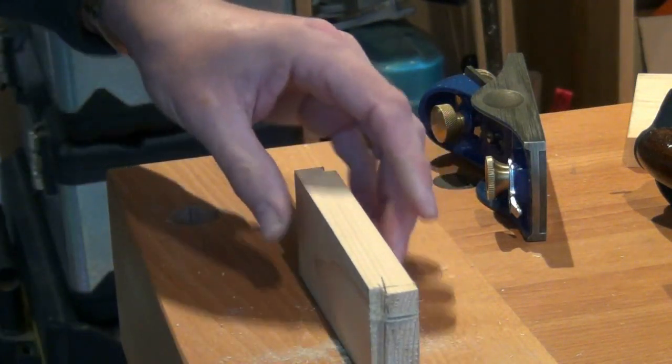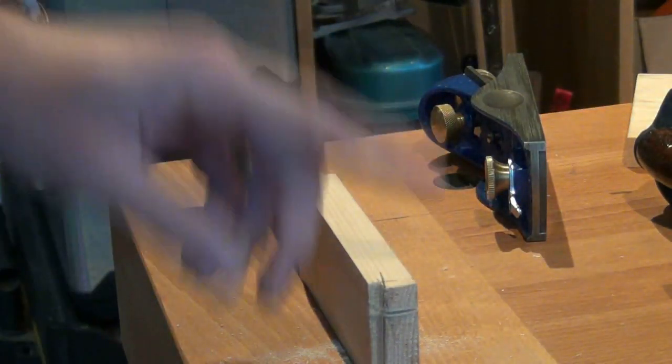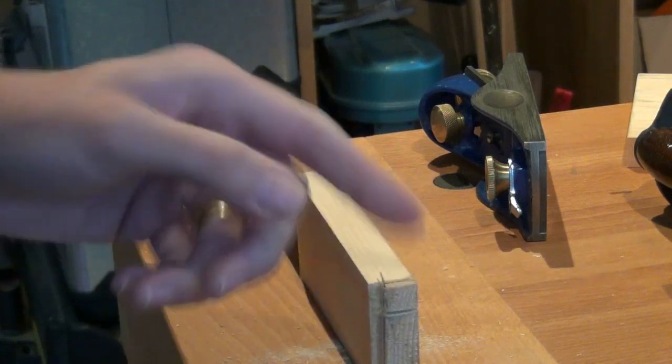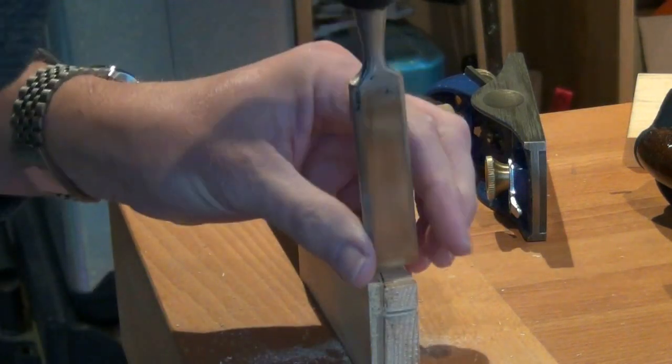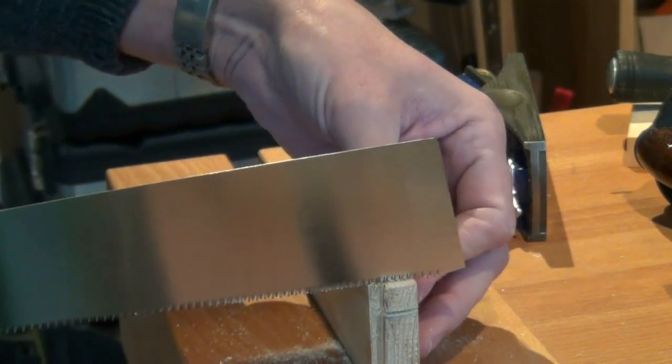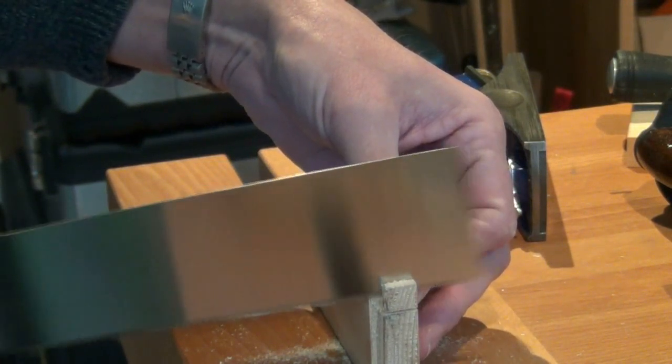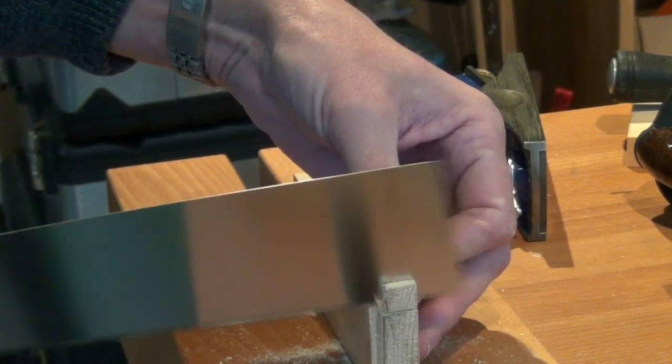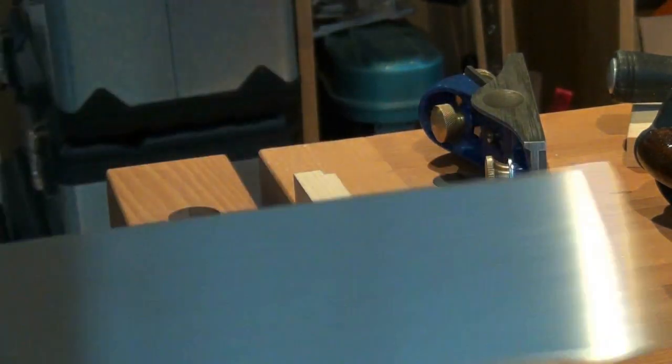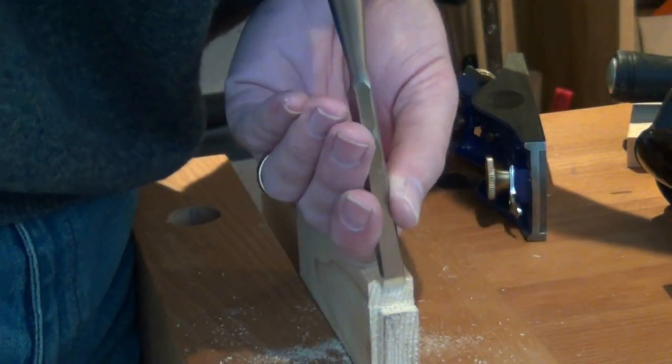Place the work around. Create a V on the marking gauge line, set the saw in, and just clean up with a chisel.